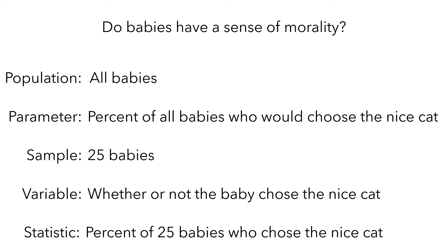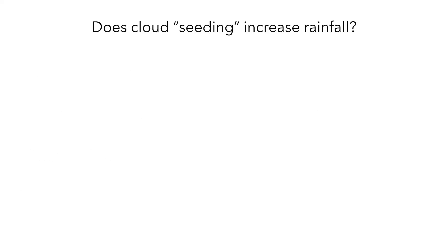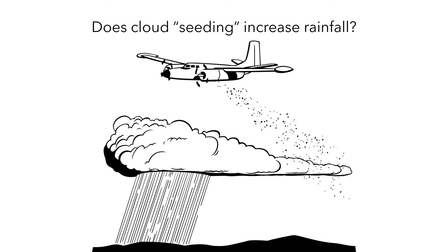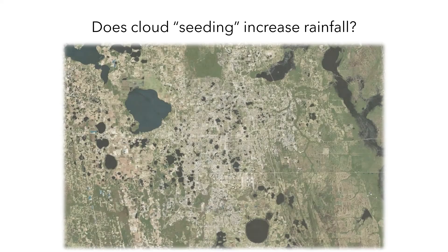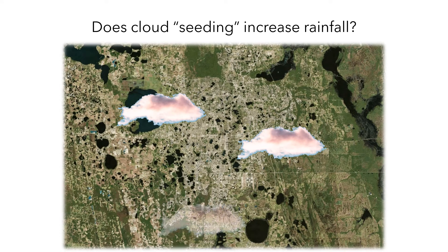Many farmers want to know whether cloud seeding increases rainfall — that is, whether you can scatter some chemicals from a plane into clouds and produce rain. To test this, researchers in Florida went to Orlando for a week, tried seeding each cloud with silver iodide, measured the amount of rainfall from each cloud, and compared that to prior data about rainfall. Take a moment to think about what the population, parameter, sample, variable, and statistic might be.